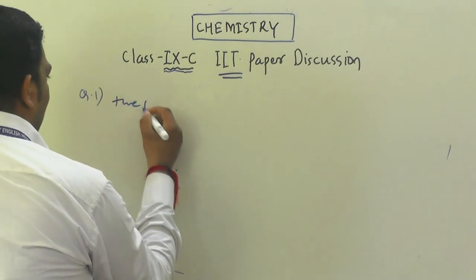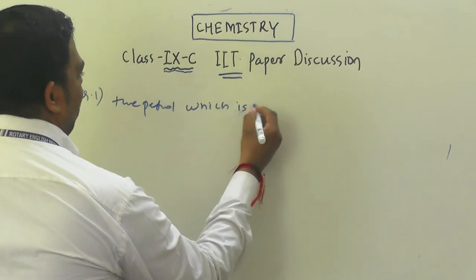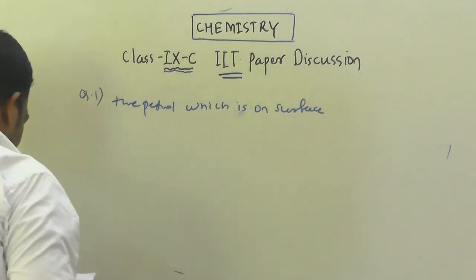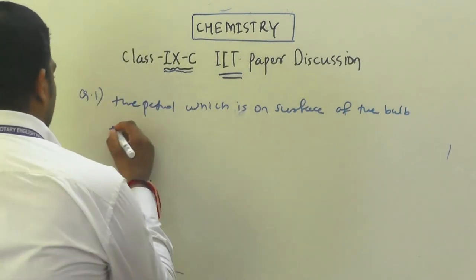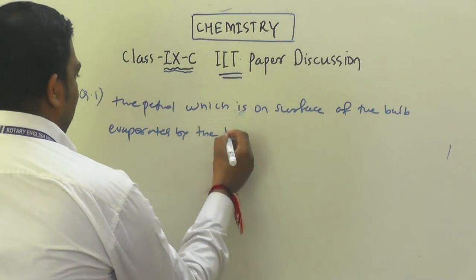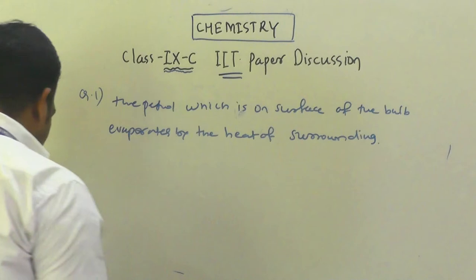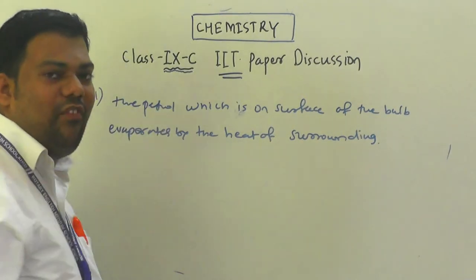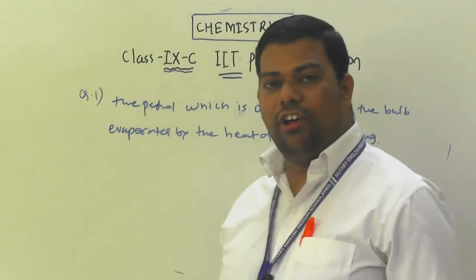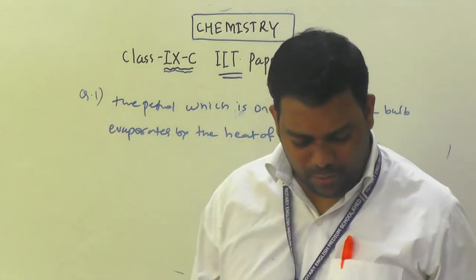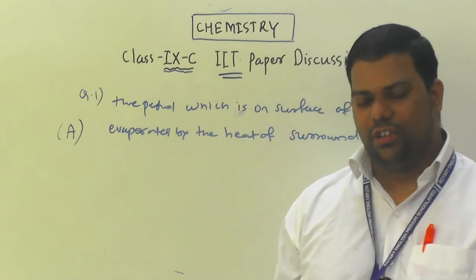The reason is: the petrol which is on the surface of the bulb evaporates, using the heat of the surrounding, and makes the surface of the bulb cool. Therefore the level of mercury starts falling. The correct option is A. Keep this reason in mind.